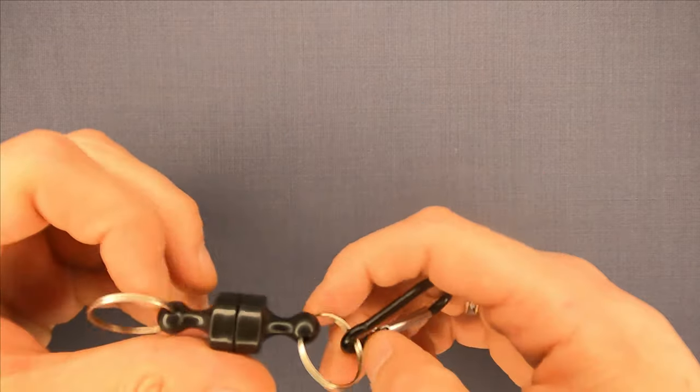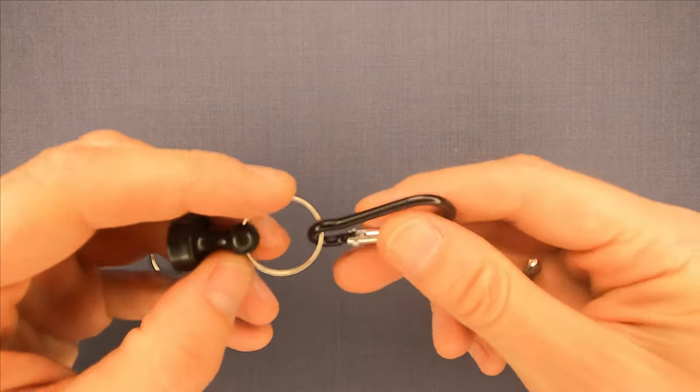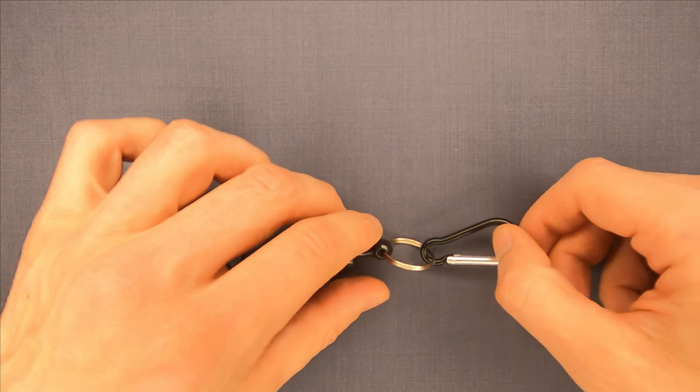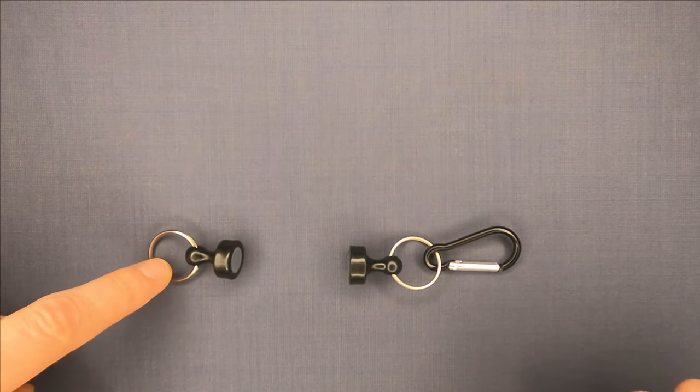It has two parts with strong magnets on each one. This one has a carabiner clip and the other one has a split ring.